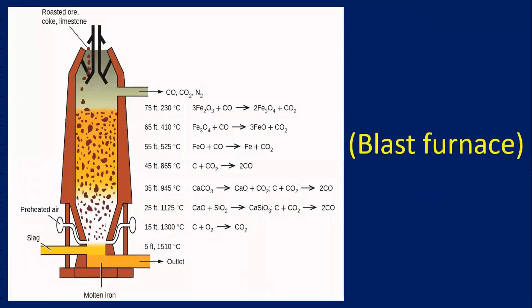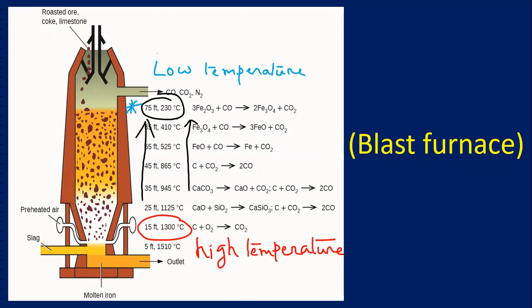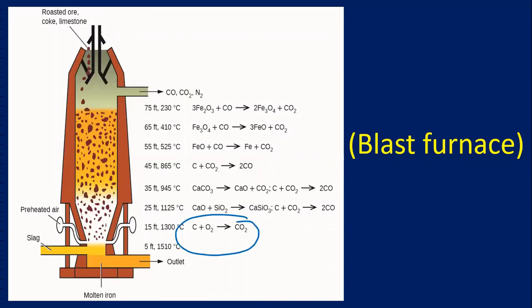This is a blast furnace. See the bottom part. That is maintained at 1300 degrees centigrade to 1500 degrees centigrade. As you go up, the temperature maintenance decreases. Top part is maintained at low temperature. Bottom part is maintained at high temperature. Take coke in this. When coke is taken, this can be changed as CO2 or CO.